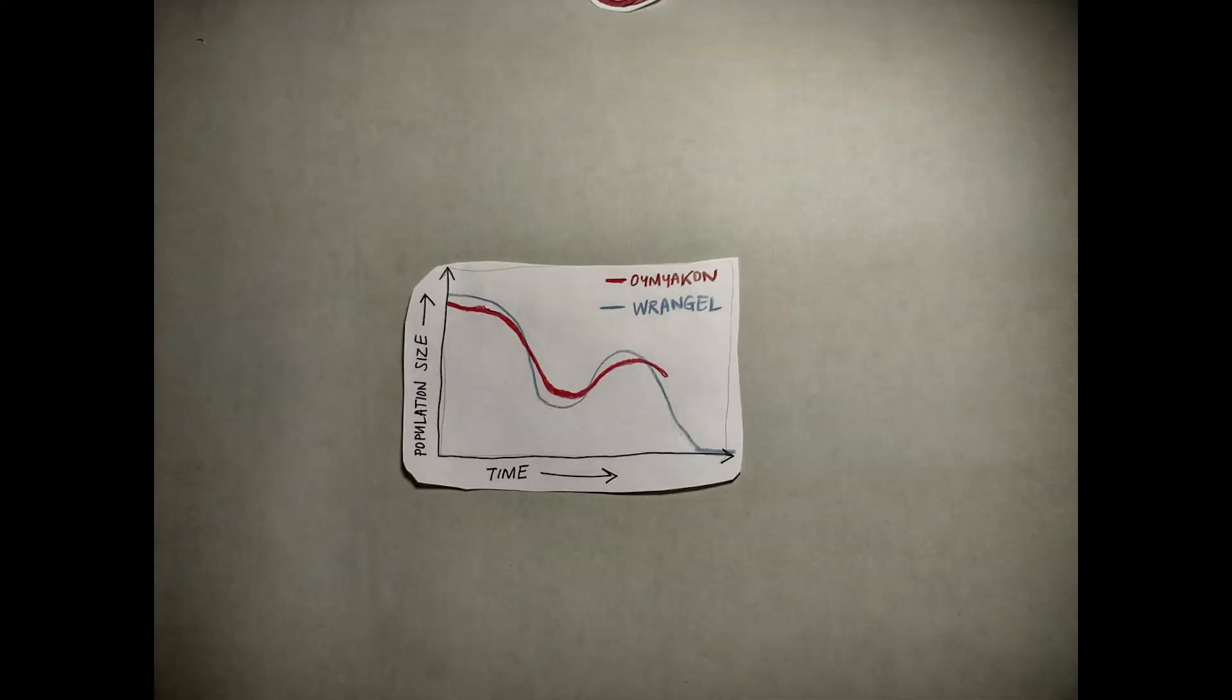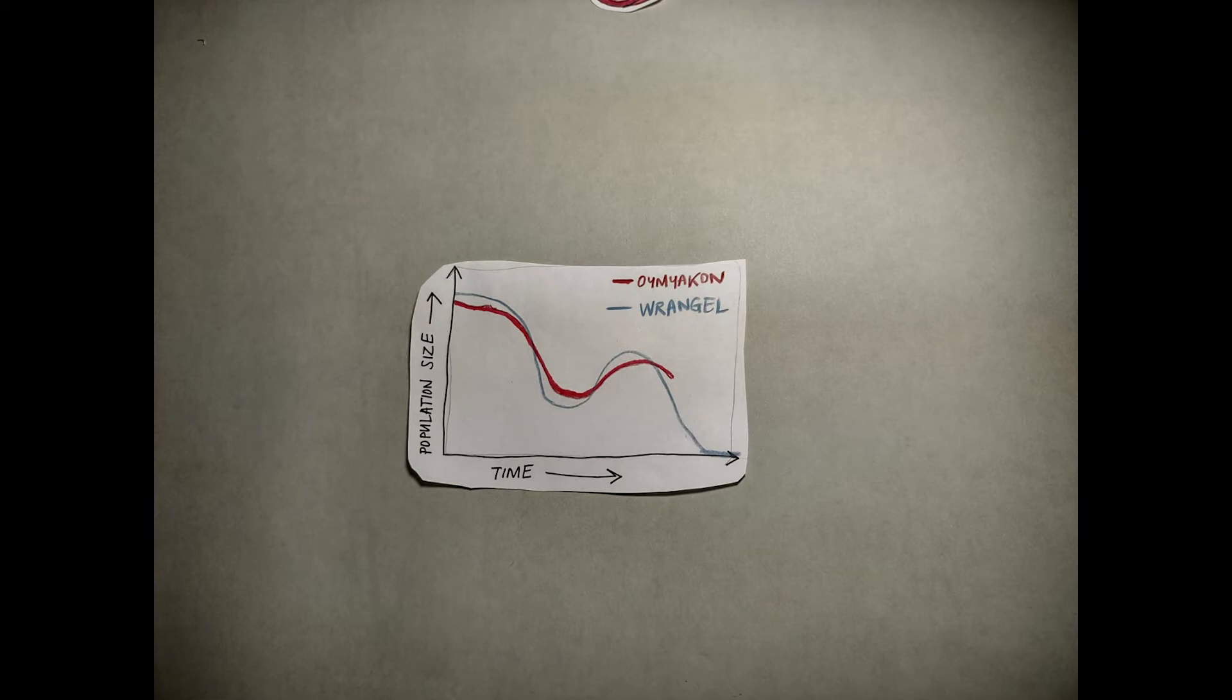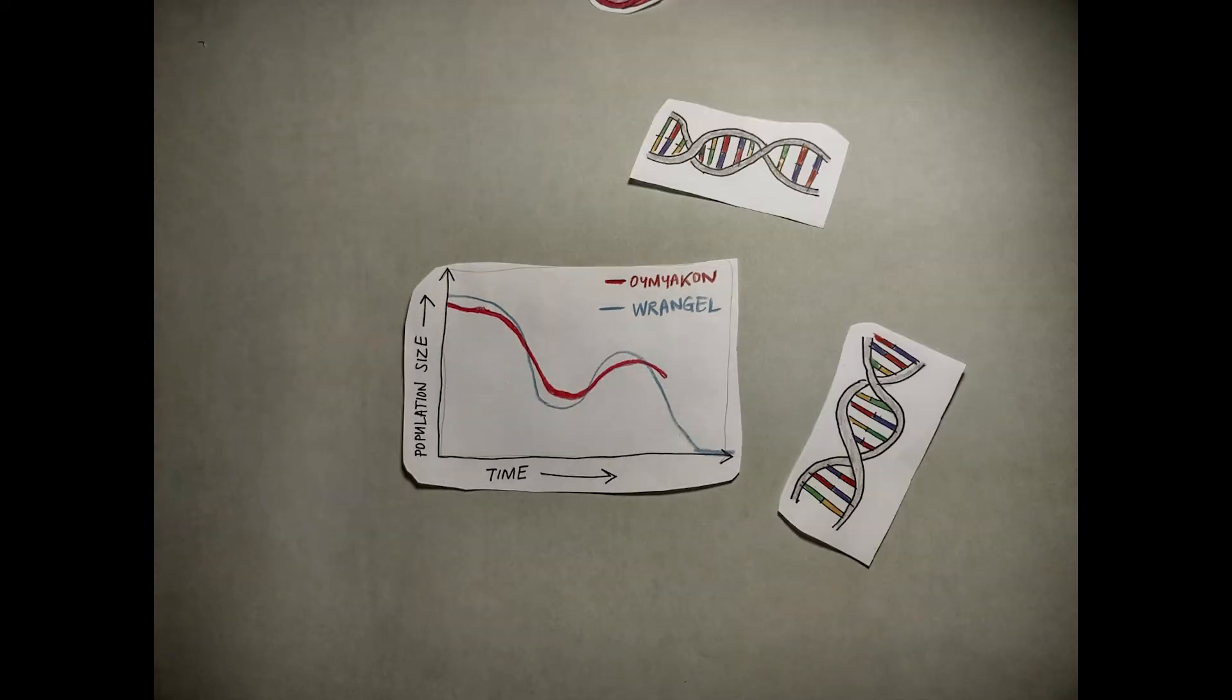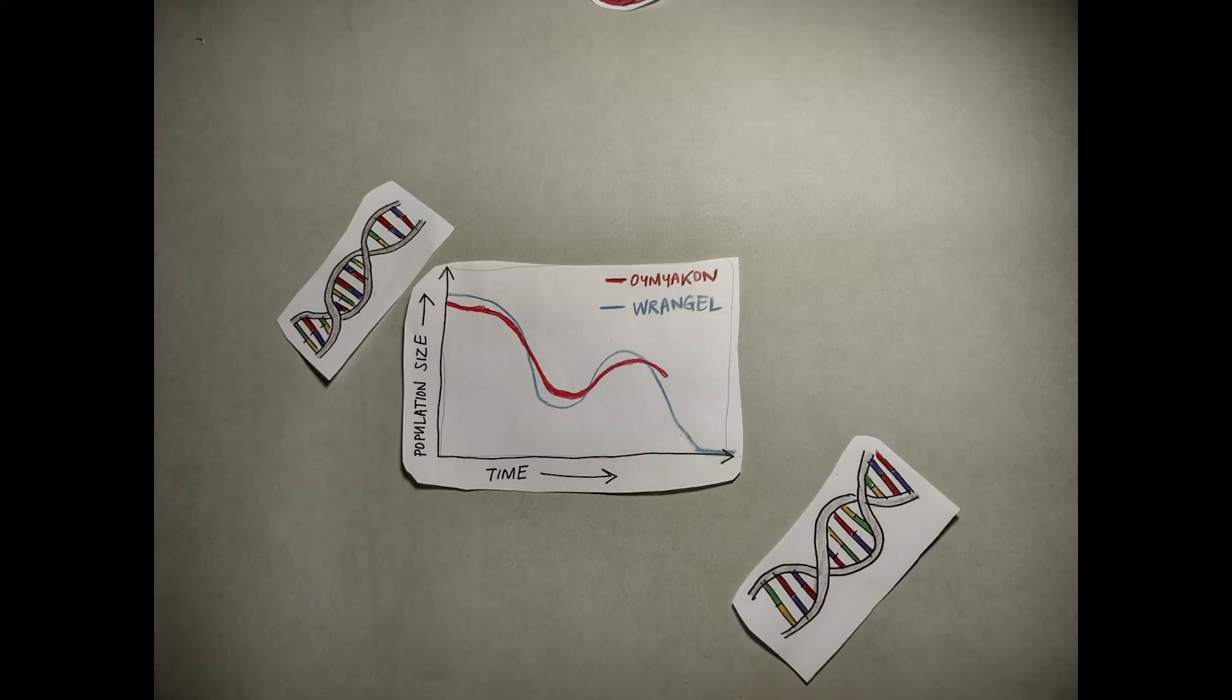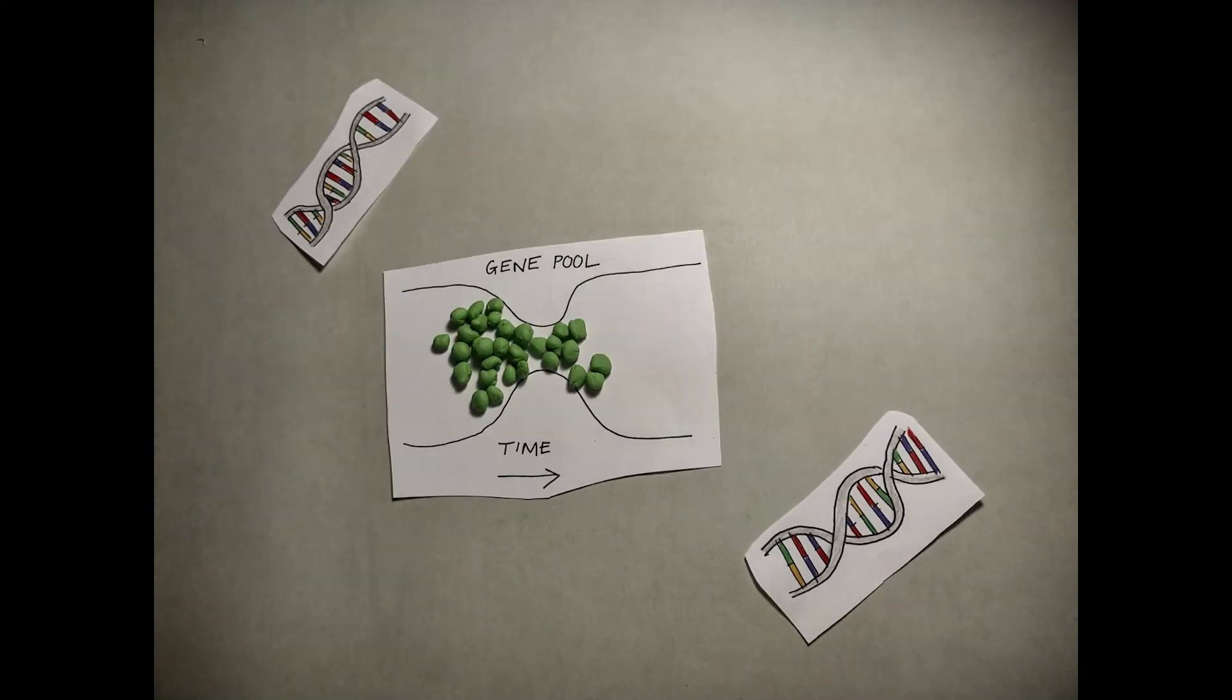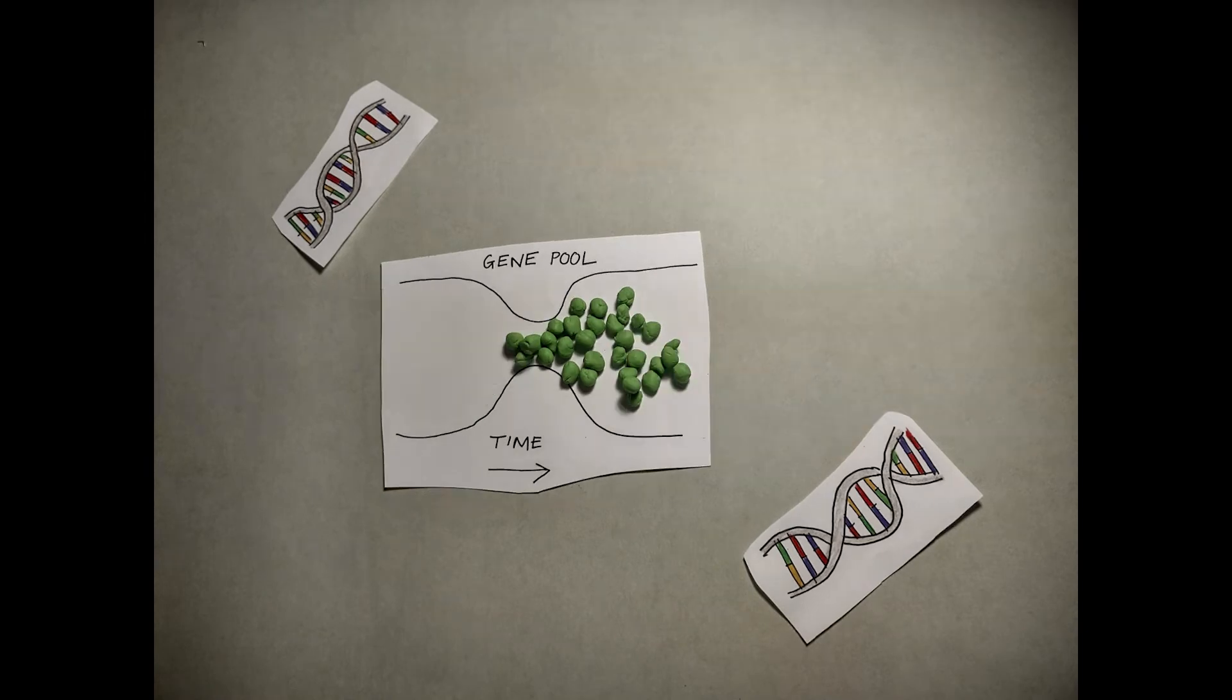As you can see, the Siberian and the Wrangell mammoths have identical demographic trajectories once the difference in their ages is corrected. Population bottlenecks occurred at around the time of the last glaciation, leading to a severe decline in the number of ancestors.